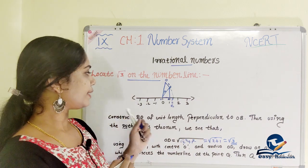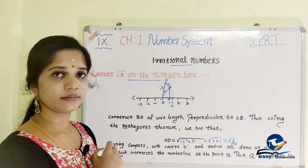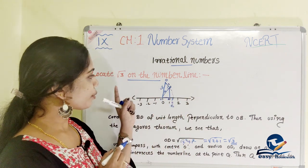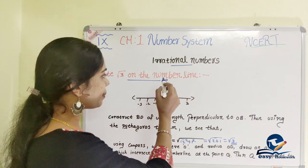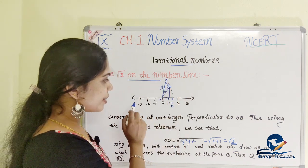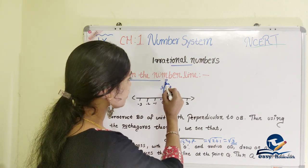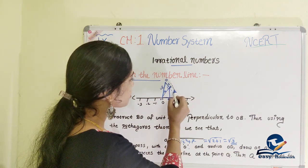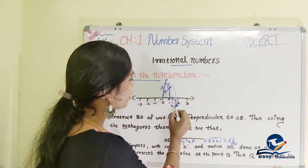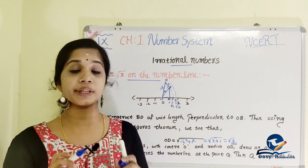Then we construct root 3. We use the construction to mark root 3 on the number line in the same way as before.